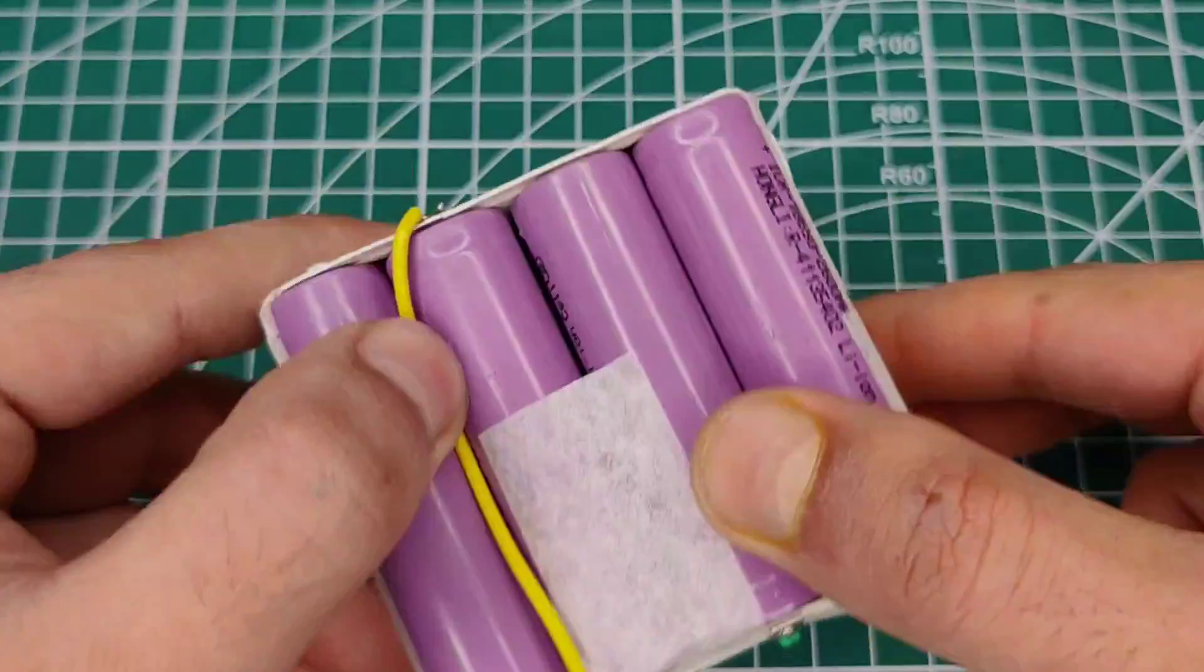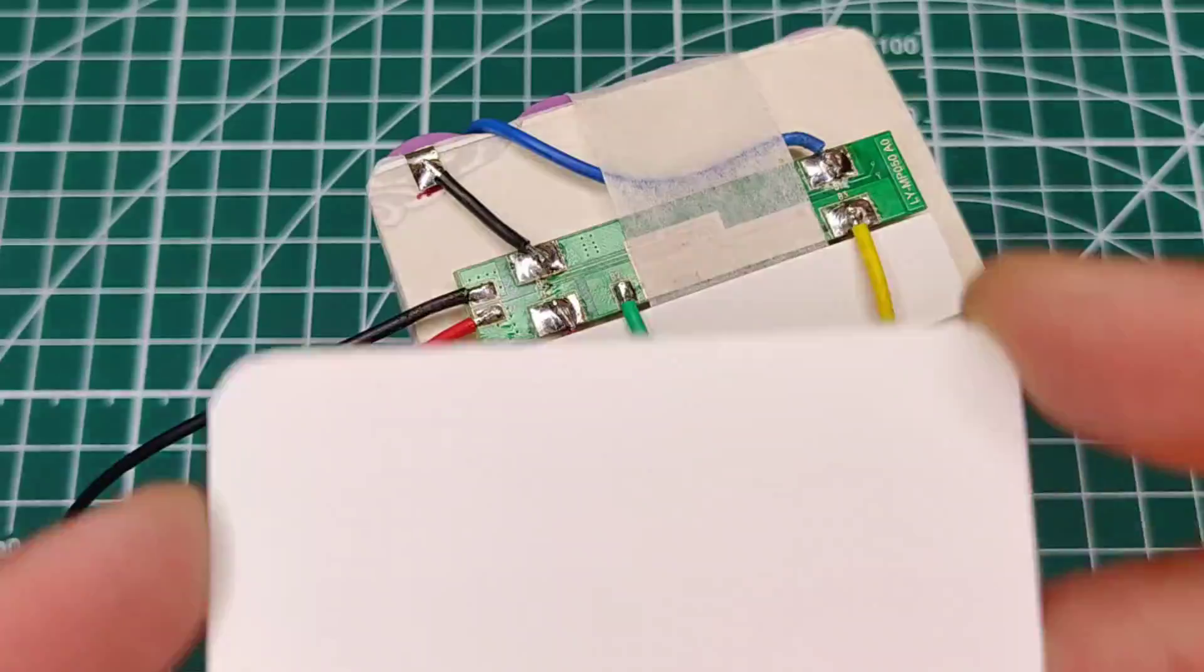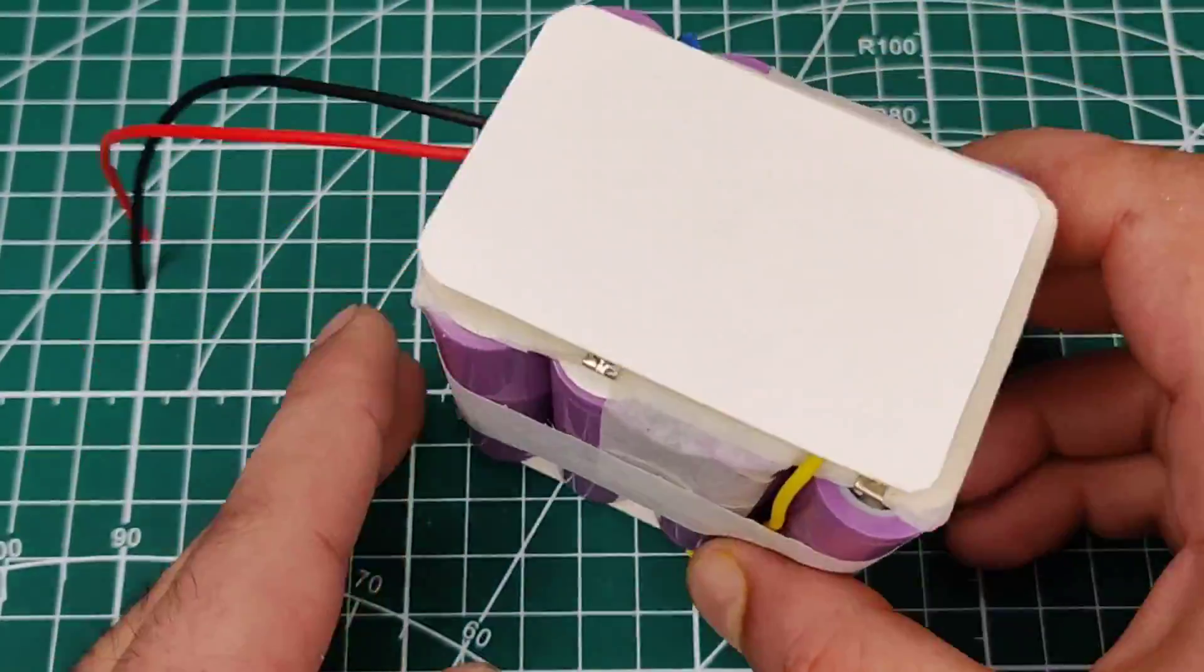After completing wiring, solder output wires. And then use paper card and paper tape for final insulation.